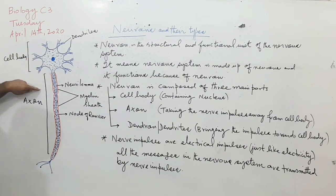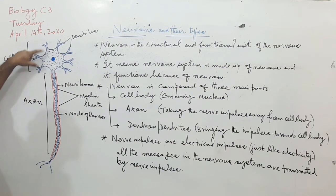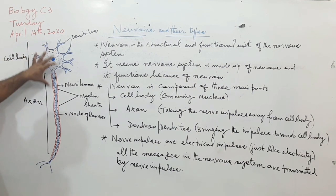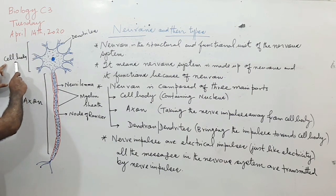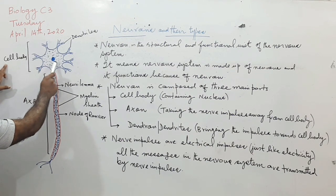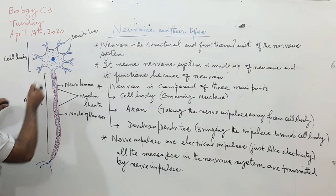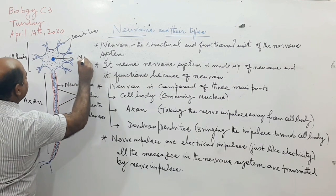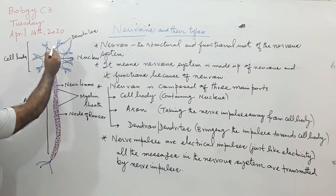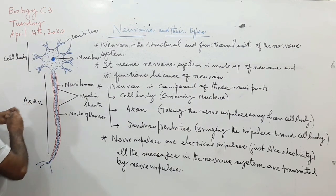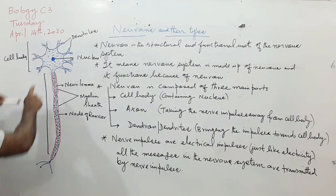Regarding the structure of the neuron, if you look at this diagram I have already drawn, you can see this neuron is just like a single cell. First of all, you can see this is the cell body, and the cell body contains the nucleus inside it. The dendrites are actually cytoplasmic extensions.